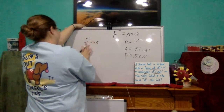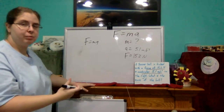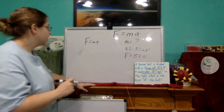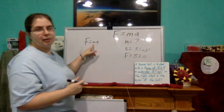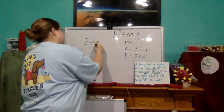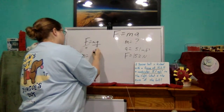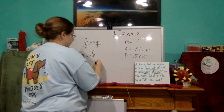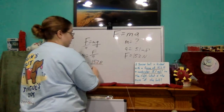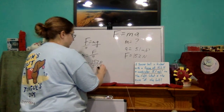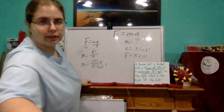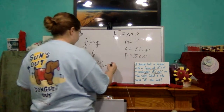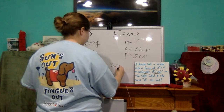What I like to do is rearrange the equation before I put the numbers in — some students like to put the numbers in first, whatever works best for you. I'm searching for M, which means I want to get it by itself. I'm going to divide both sides by A, and we're left with M equals F over A. So M equals 15.2 newtons divided by 5.1 meters per second squared, giving us a mass of 3.0 kilograms.